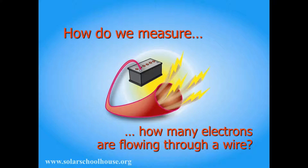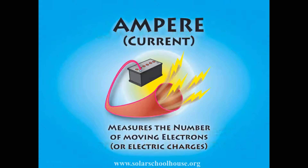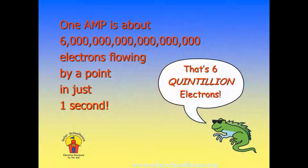So how do we measure this current of electrons moving through a wire? What unit of measure do we use? Amperes — also called amps — measure the number of moving electrons. The number of electrons measured by 1 amp is about 6 billion billion electrons, also called 6 quintillion. 6 quintillion electrons moving past a point in a wire in 1 second is equal to 1 amp.